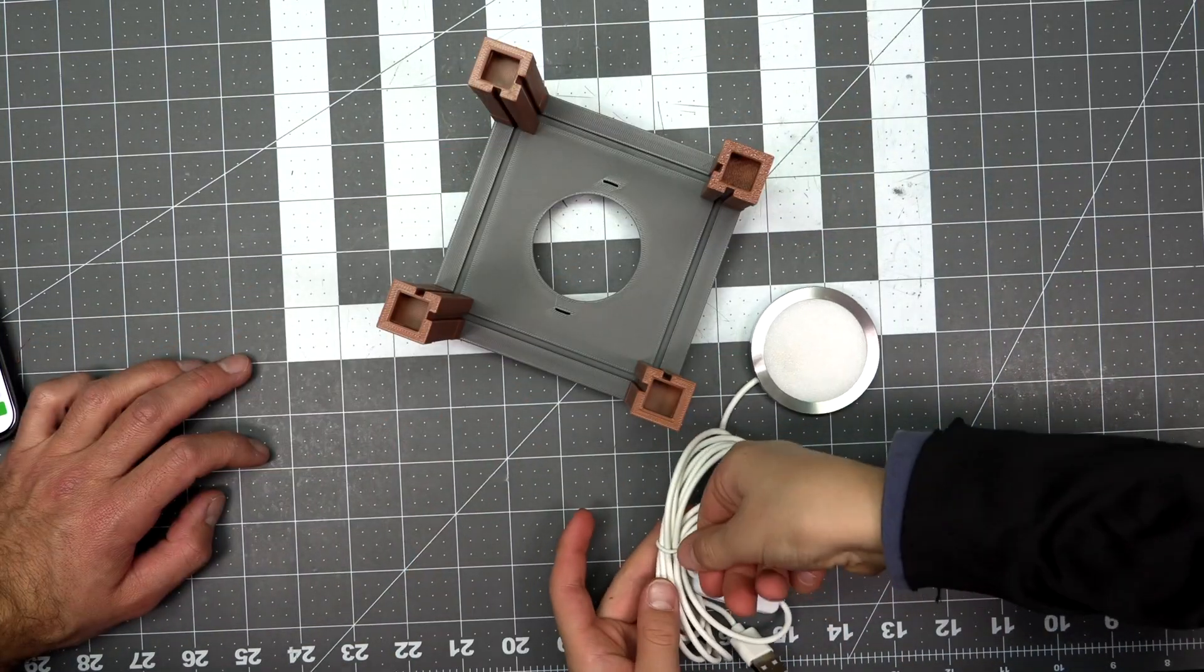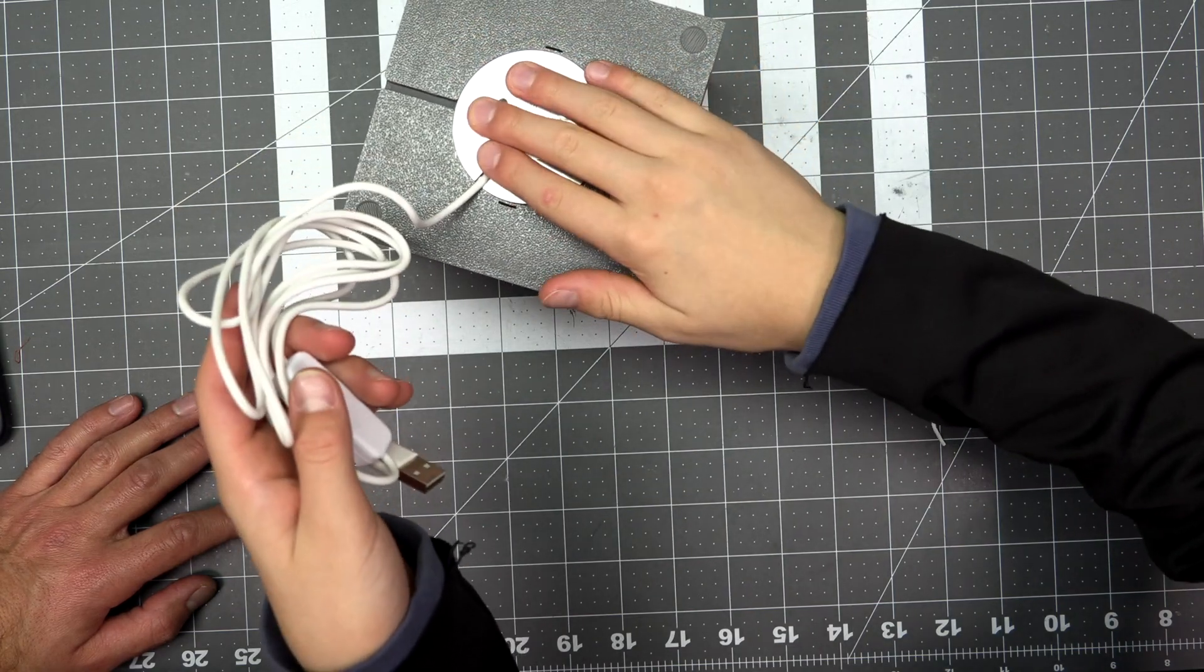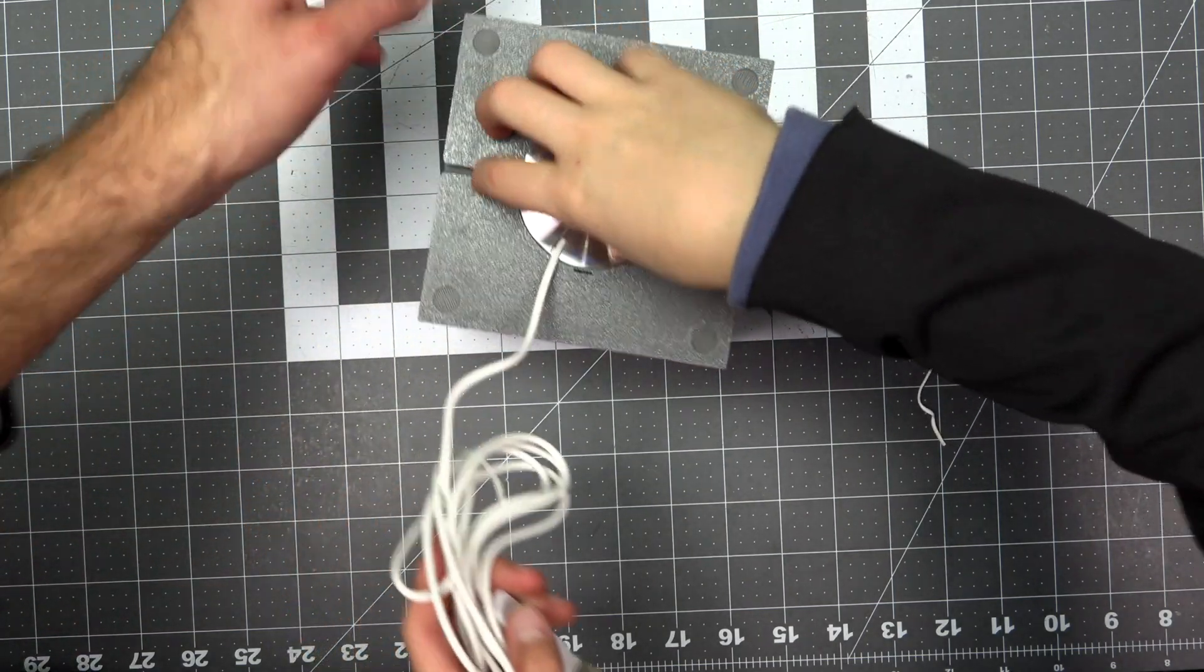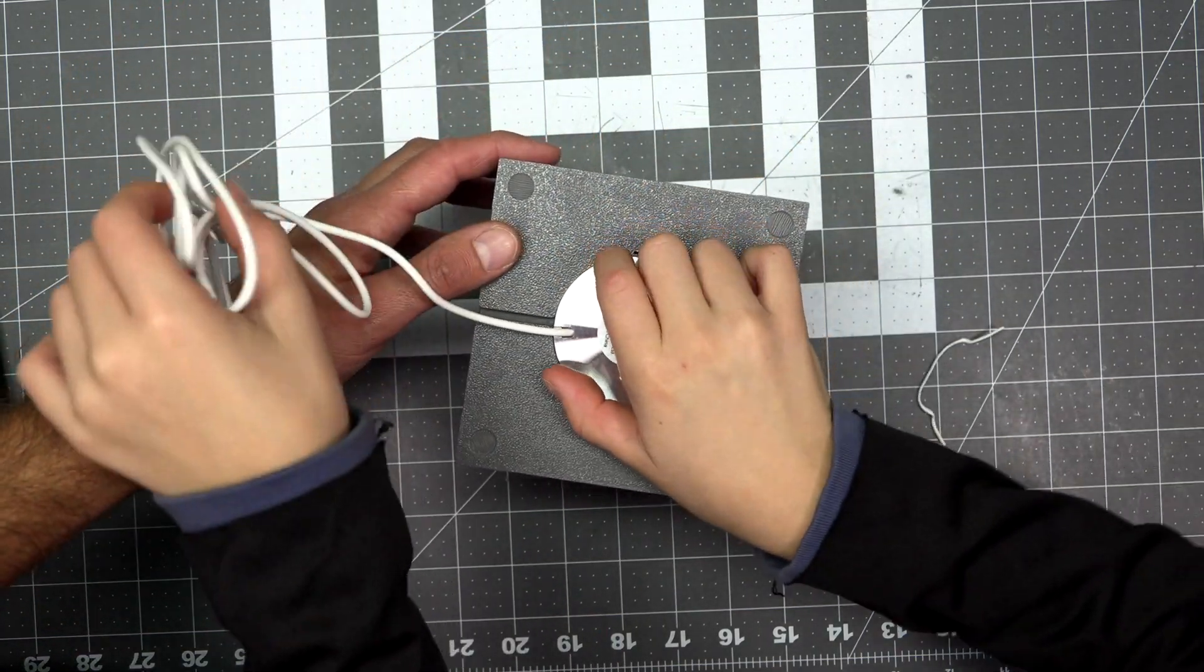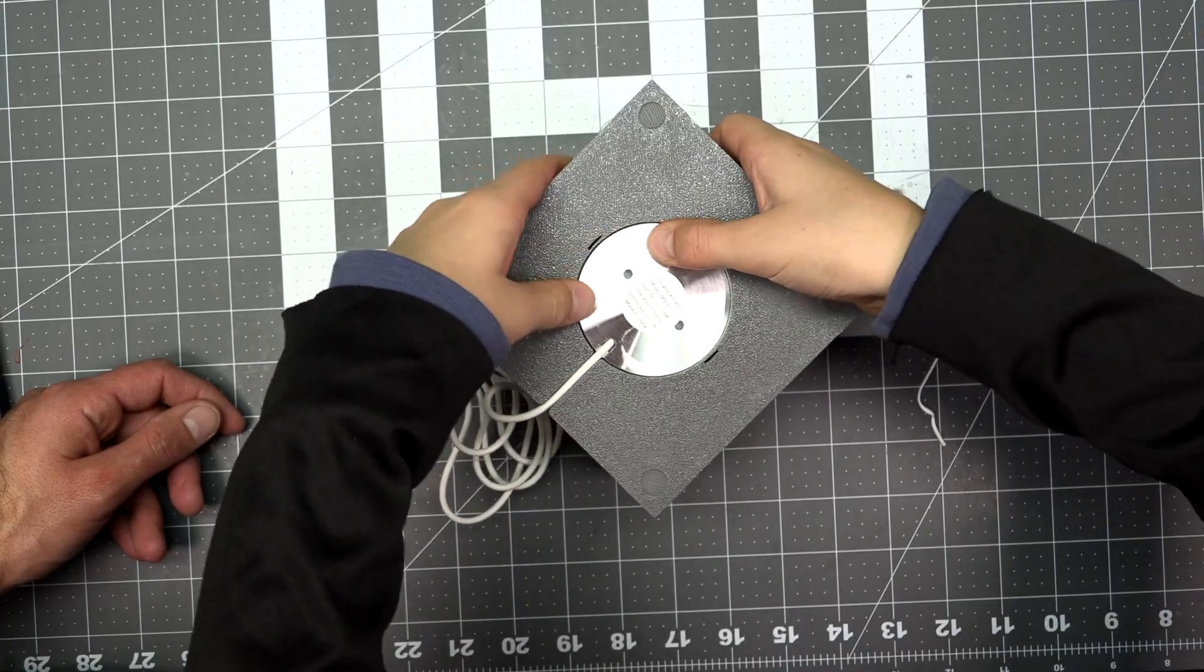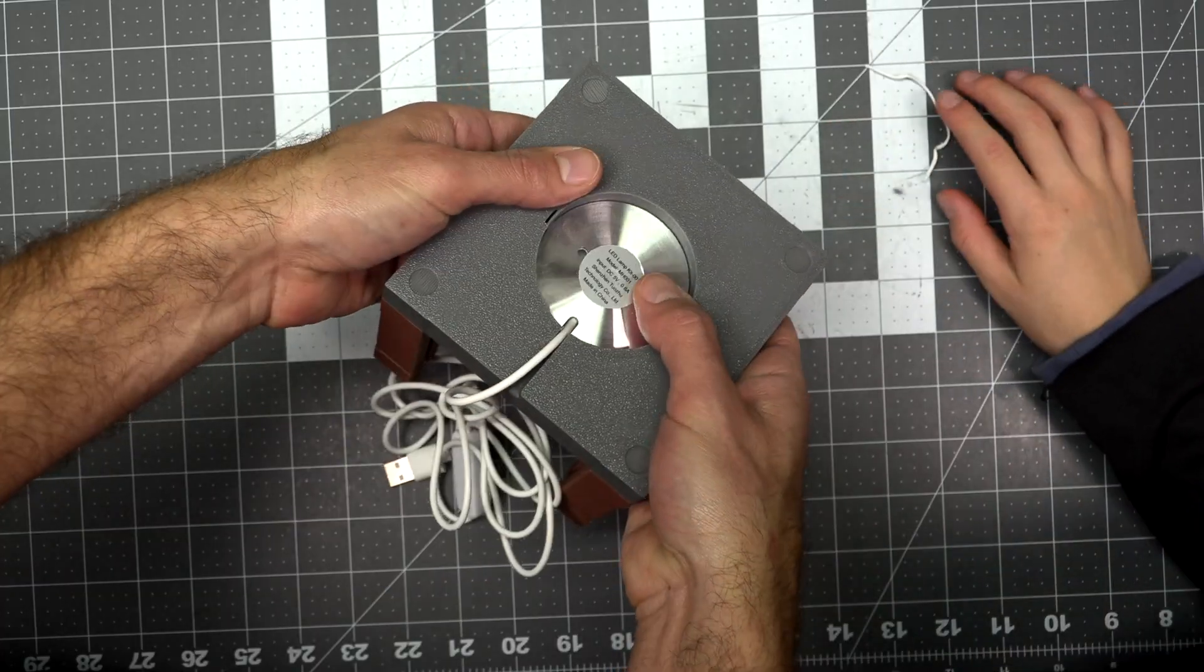Then it's time to install the light source. Just press the LED disc right into that circle hole, and line up the cord with that little tunnel. It's a pretty snug fit, so don't be afraid to give it some muscle, and press it all the way until it stops.